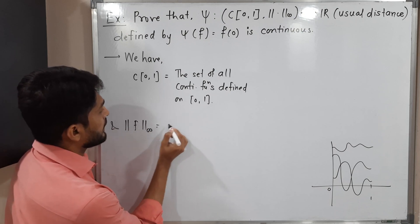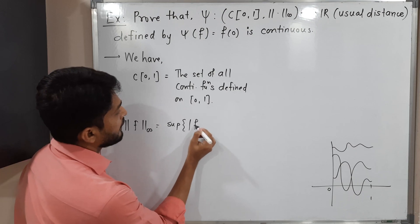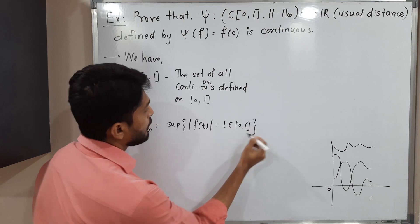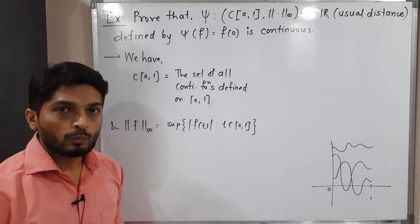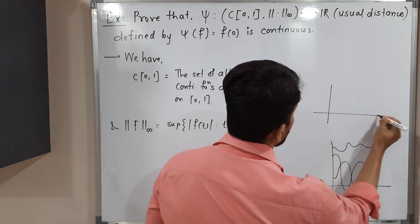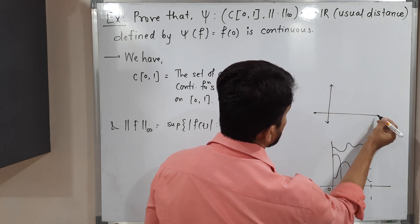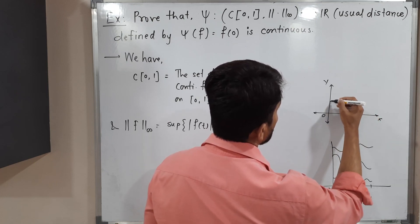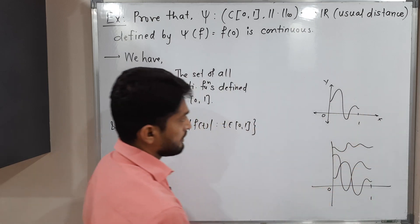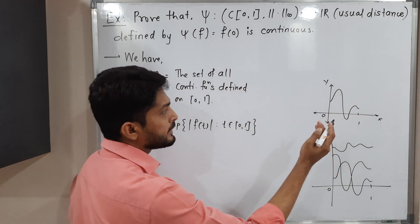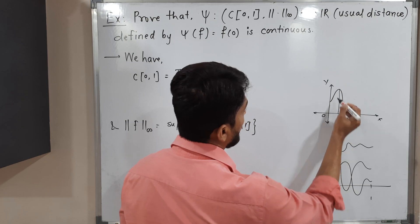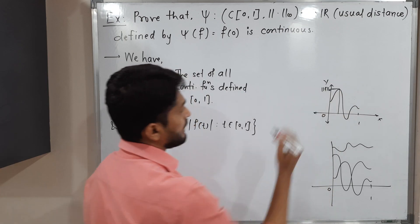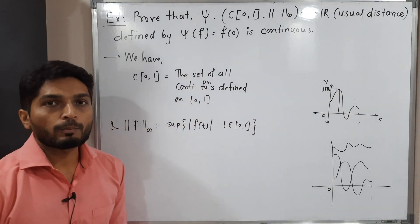The norm infinity is defined as: ‖f‖∞ = supremum of |f(t)| for t in [0,1]. To understand what it means: on the closed interval [0,1], if you take a function and consider its absolute value, the maximum value you get is nothing but ‖f‖∞. That is how norm infinity is defined.